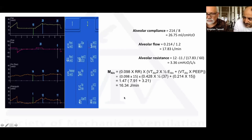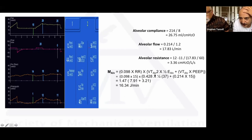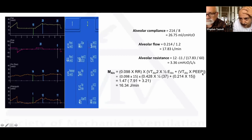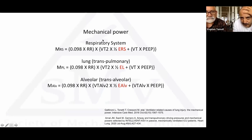Since we now know the alveolar elastance, we put it into the equation to calculate alveolar mechanical power, using Gattinoni's formula: 0.098 × RR × [alveolar tidal volume × 2 + ½ × (1/alveolar compliance) + alveolar tidal volume × PEEP]. The result: alveolar mechanical power = 16.34 J/min. This parallels the standard formula — for the whole respiratory system we use total respiratory elastance; for the lung we use transpulmonary-based elastance; now for alveolar mechanical power we use alveolar elastance.